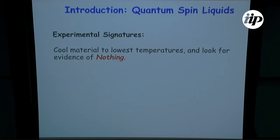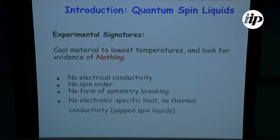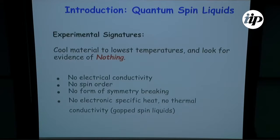How do you look for a spin liquid? You take your material, cool it down, and look for signatures — basically nothing. There's no electrical conductivity, no spin order, no other type of symmetry breaking, and if it's a gapped spin liquid, there's no low-energy specific heat or thermal conductivity. So you see nothing, and then you get excited. Clearly this is not a very satisfactory state of affairs. We'd like to have a more positive signature of these states — they're not boring, they actually do interesting things, and the challenge is how to expose this non-trivial physics.